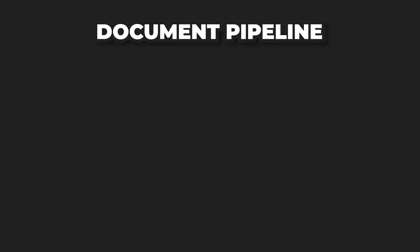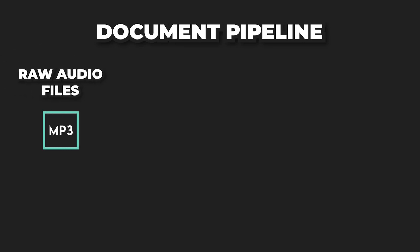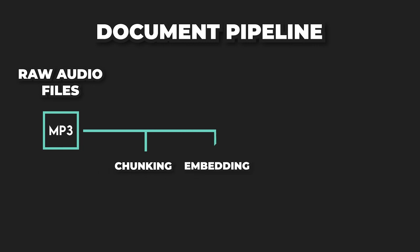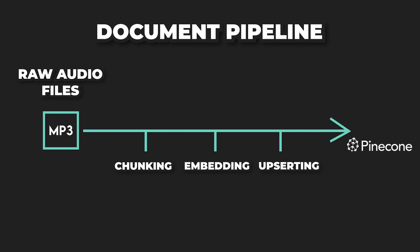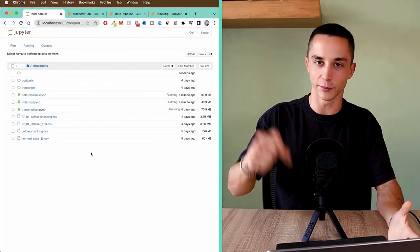The first step in building one of these applications is what's called a document pipeline — essentially how you take your raw data, in my case YouTube videos or podcasts, and bridge that into the right format: chopping it up correctly, putting the right information into the metadata, and sending it off to the vector database, which I'm using Pinecone for. From transcript to vectorized data in the database — that's the distance the document pipeline covers.